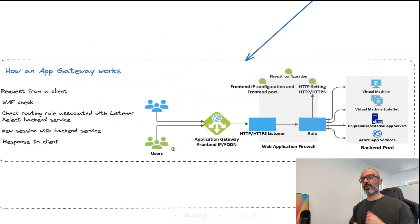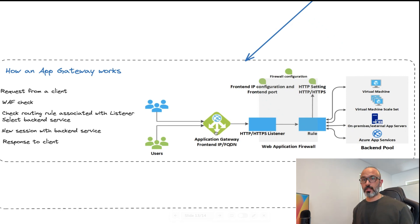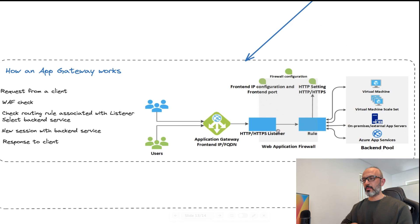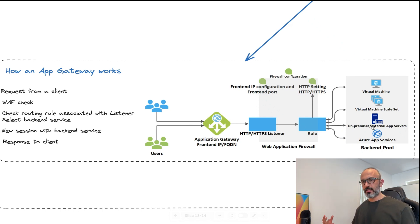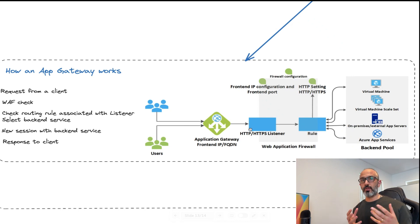Here is how an Application Gateway actually works. When a client sends a request, it first goes through a WAF check to make sure it is not a security threat. Next, it checks a routing rule associated with a listener — the listener is listening for HTTP requests on a specific port. Based on whether URL-based or multi-site routing is defined, it decides where to forward the traffic. Finally, the session gets associated with the backend service. When the backend service responds, it sends back to the Application Gateway, which forwards it to the client.